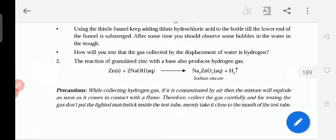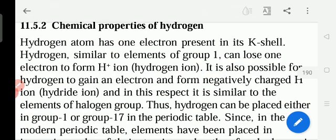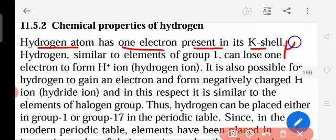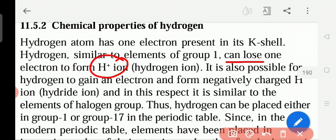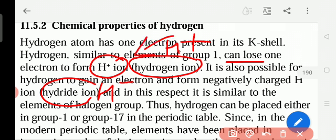Now we will see chemical properties of the hydrogen. That means if hydrogen is reacting with other elements, what are the results? Hydrogen atom has one electron present in its K shell. Because atomic number is only one. This hydrogen, though it has one electron, can lose electron to become a positive charge, H+. And also it can gain electron and become H-, hydride ion. It can become positive and also negative.